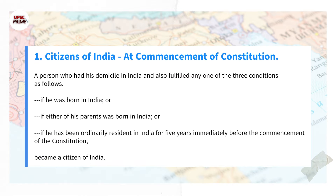Category 1: A person who had his domicile in India and also fulfilled any one of the three conditions: if he was born in India, or if either of his parents was born in India, or if he had been ordinarily resident in India for five years immediately before the commencement of the constitution, became a citizen of India.